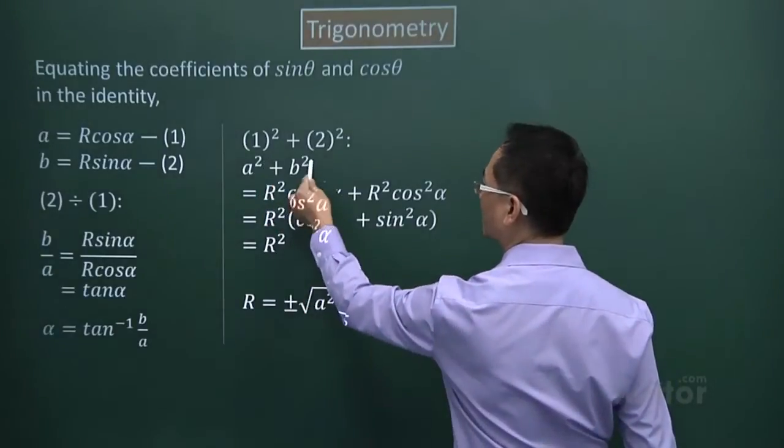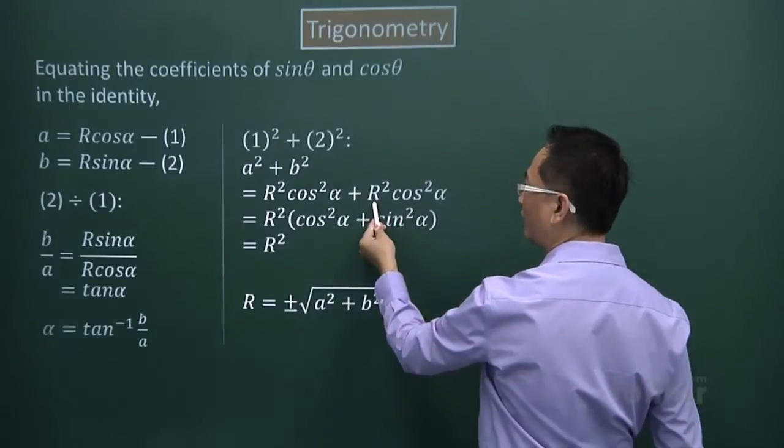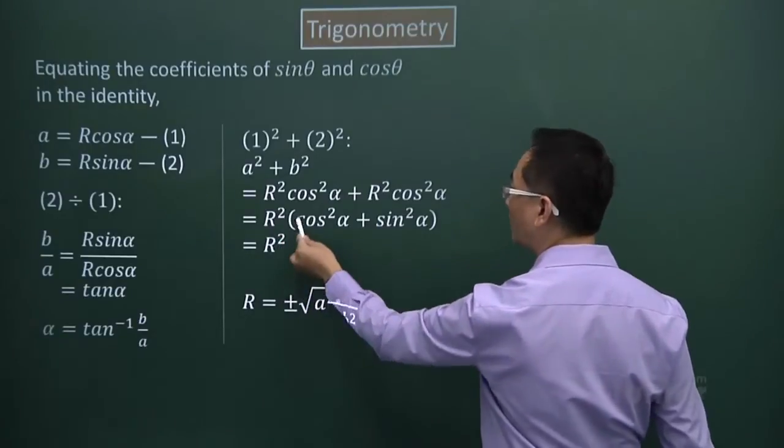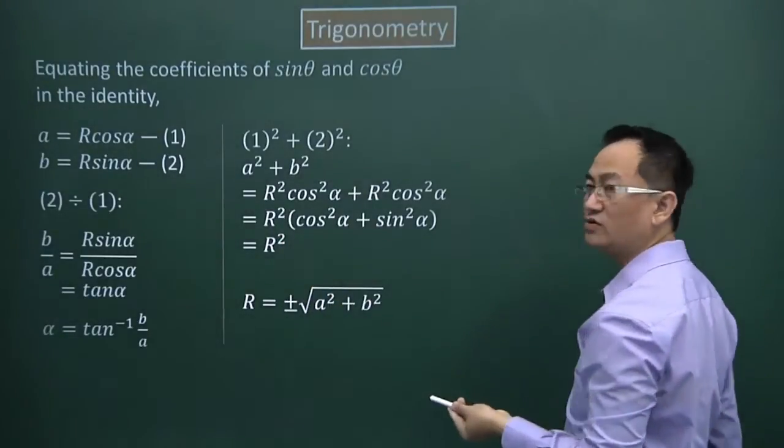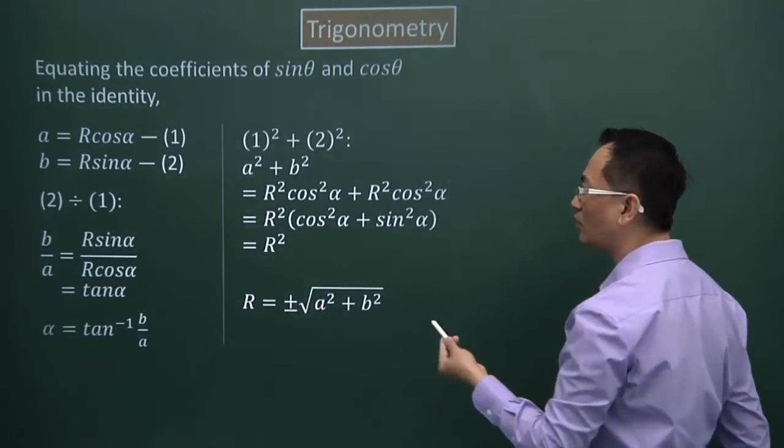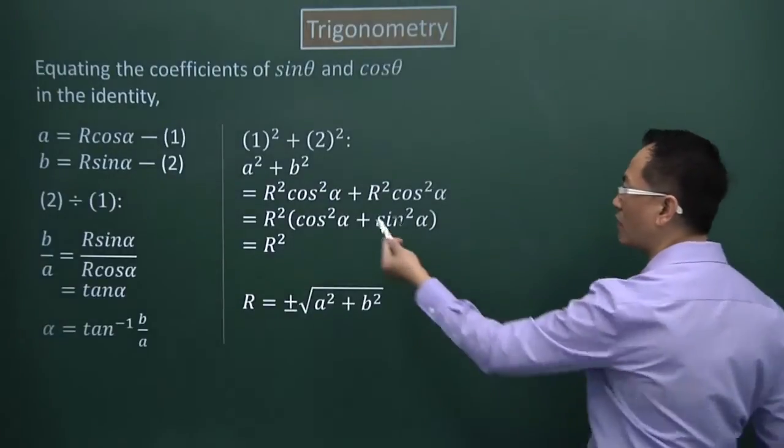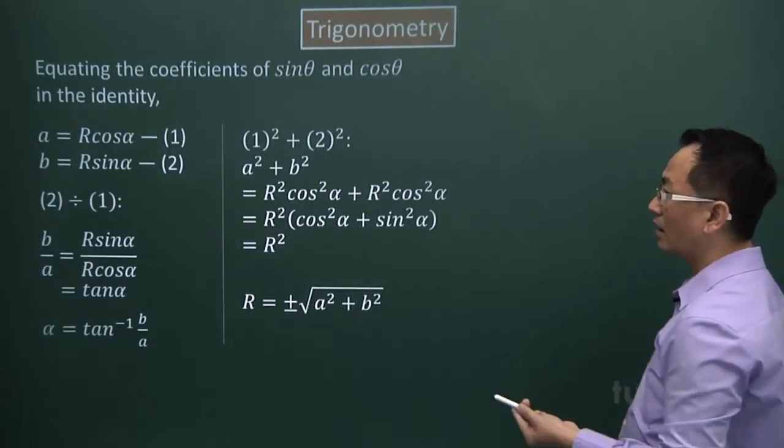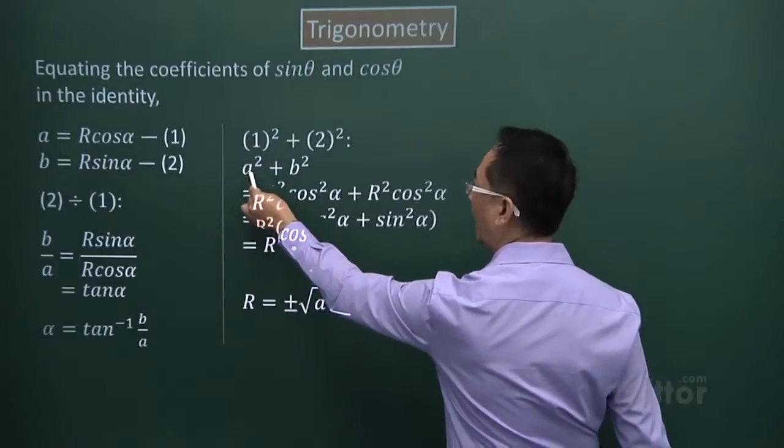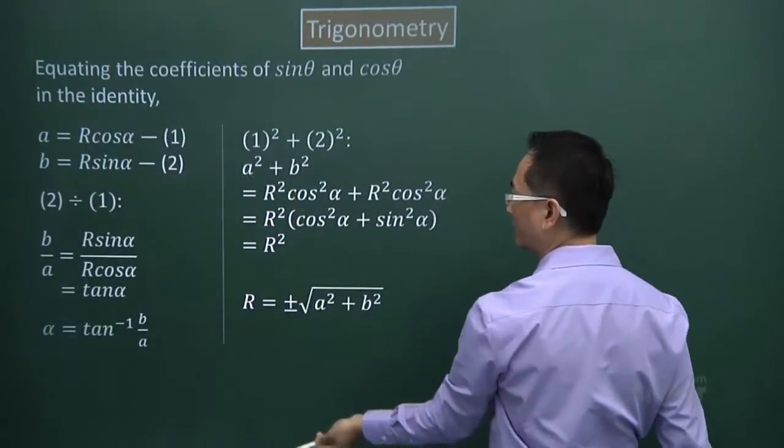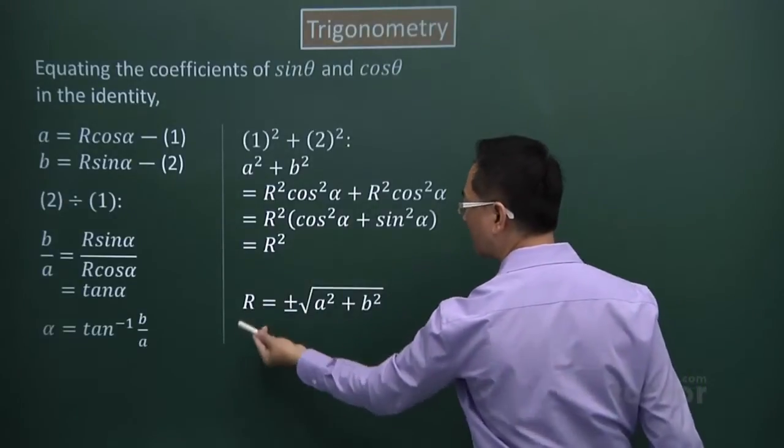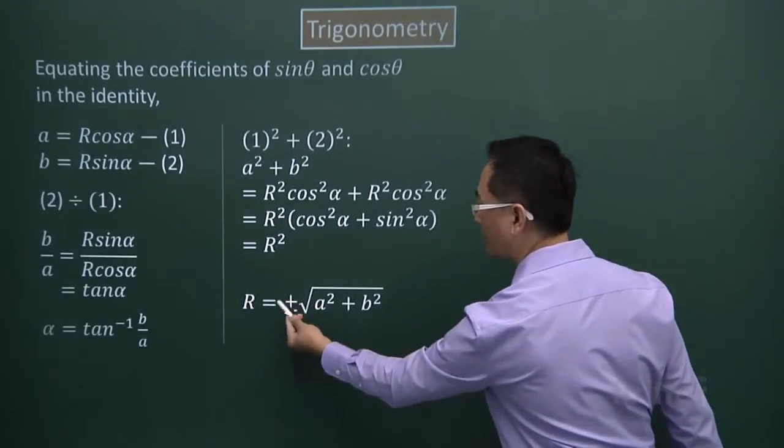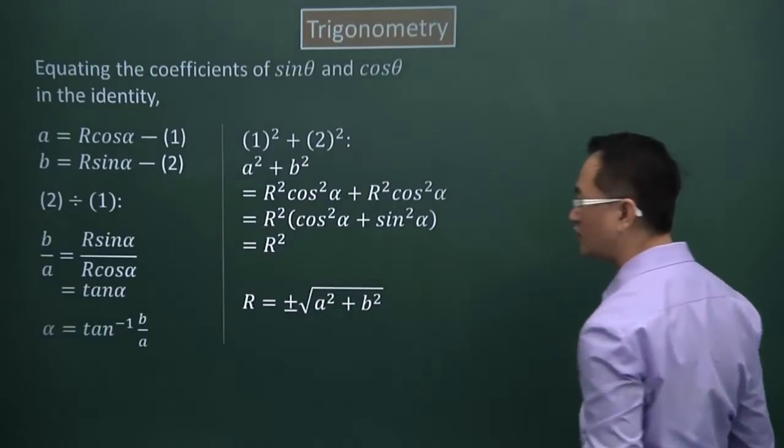Factorizing this expression, the R² is taken out. Now what remains in the bracket is reduced to 1. That is a simple Pythagorean identity. cos²α + sin²α will give me 1. So now I have A² + B² = R². So to simplify, to make R the subject, I square rooted both sides. Hence, you also have plus minus square root of A² + B².